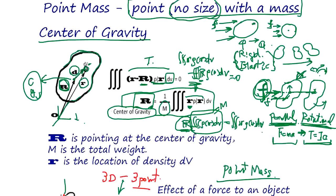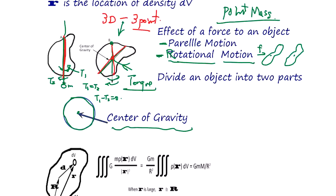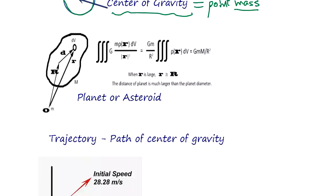The center of gravity is the point mass. Point mass means the mass is concentrated on this point — it has a mass but the size is zero. That's the way we handle the motion of an object in Newton's mechanics. We will talk about how rotational motion works in the chapter on rigid material and elastic material, but in the beginning we use a point mass which is the center of gravity.